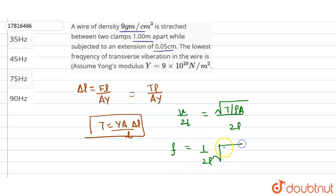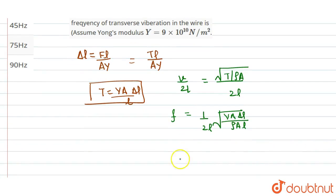1 by 2L, under root Y A delta L upon Rho A L. What is given: L is given, Delta L is given, Rho is given. And we will use the value of Y. We will substitute the Young's modulus. That is why we are given.